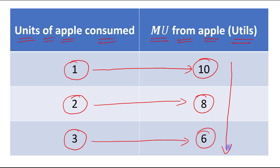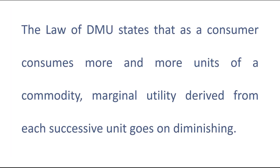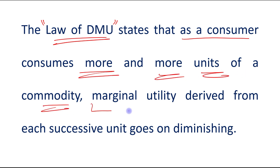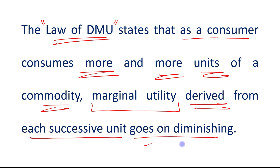The law of diminishing marginal utility states that as a consumer consumes more and more units of a commodity, the marginal utility derived from each successive unit goes on diminishing — it will decrease.